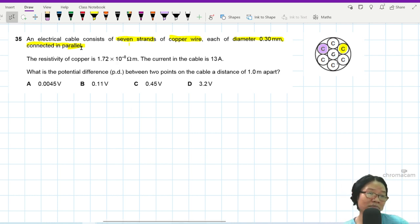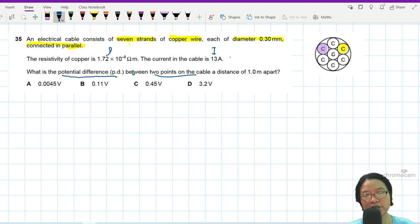They give you the resistivity of copper like this. The current in the cable is this. What is the potential difference between two points on the cable at a distance of one meter apart?